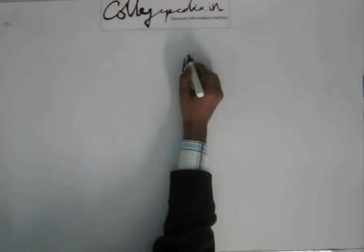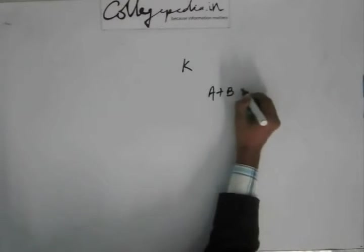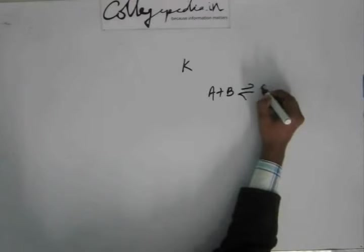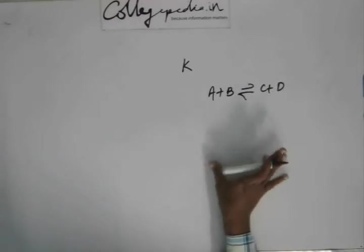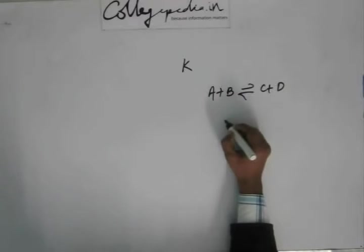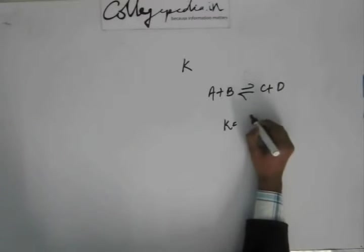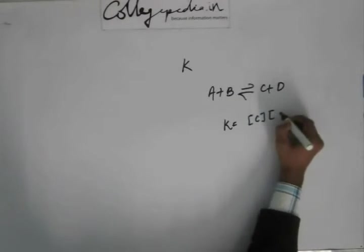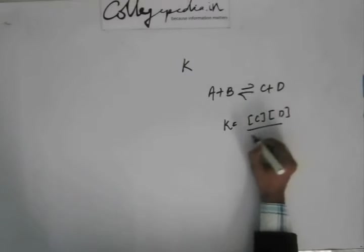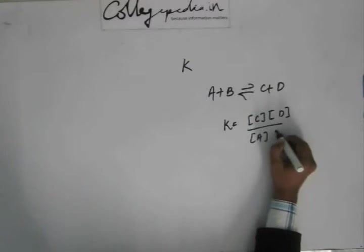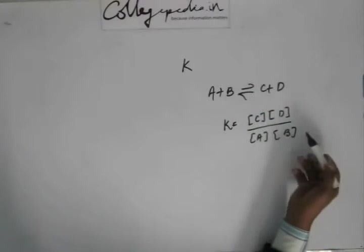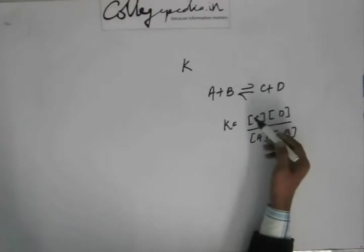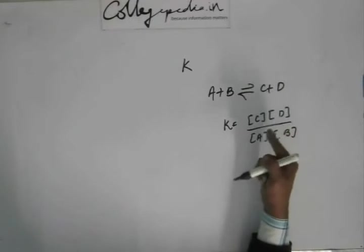Now K is an equilibrium constant. As we were discussing, A plus B is in equilibrium with C plus D. Now this K is an equilibrium constant, and K is defined as concentration of C times concentration of D upon concentration of A times concentration of B. Here the coefficients are 1. If you have coefficients, then these concentrations are raised to the power of those coefficients.